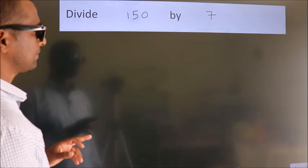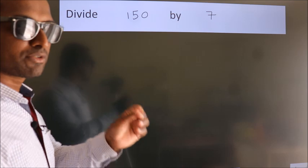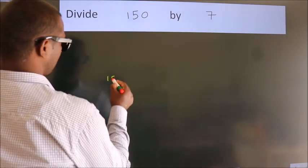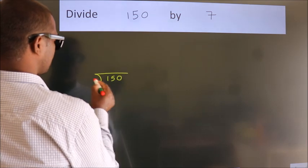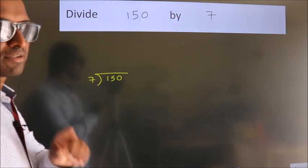Divide 150 by 7. To do this division, we should frame it in this way: 150 here, 7 here. This is your step 1.